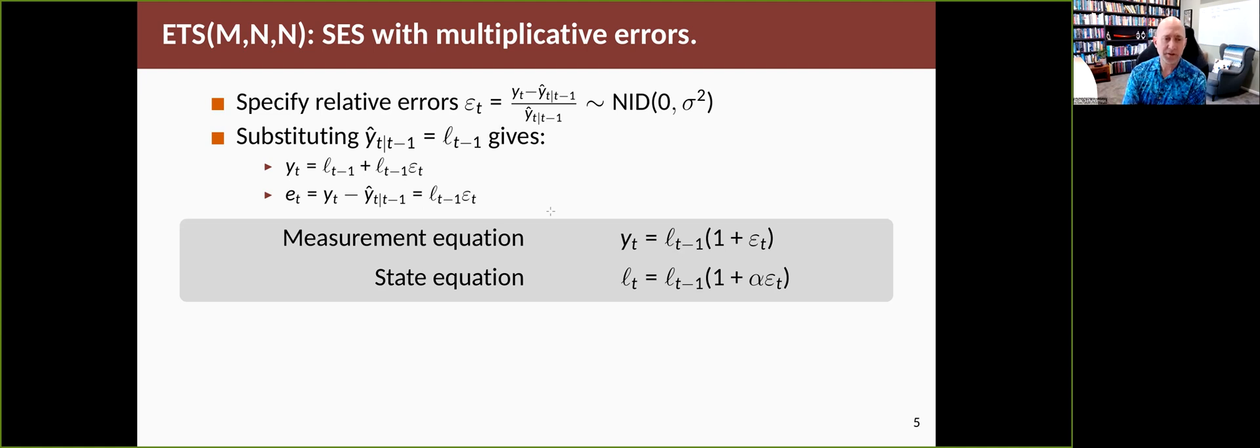So we started with the same point forecasts, but we made a different assumption about what was the stochastic homoscedastic independent error. Is it the additive error, difference between what you predicted and what you saw, or is it a relative error, a proportional error? And we end up with in the proportional case, we end up with this set of equations, and in the additive case we end up with the previous set.